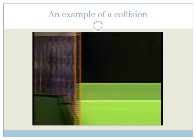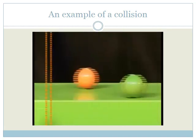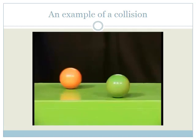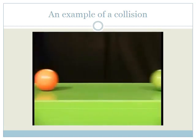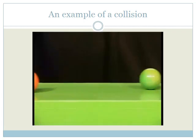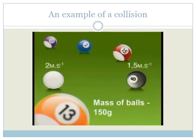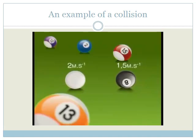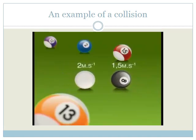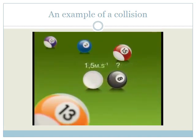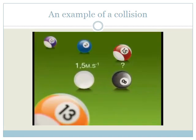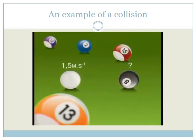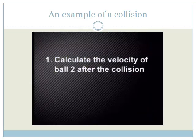I'll need a very smooth surface to prevent friction and these two shiny balls, which also offer very little resistance. Watch what happens as the two balls move towards each other. Both balls have a mass of 150 grams. Ball one is traveling at a speed of two meters per second, and ball two is traveling at a speed of 1.5 meters per second. They collide head on. After the collision, ball one travels at 1.5 meters per second to the left. With this information, you should be able to calculate the velocity of ball two after the collision.